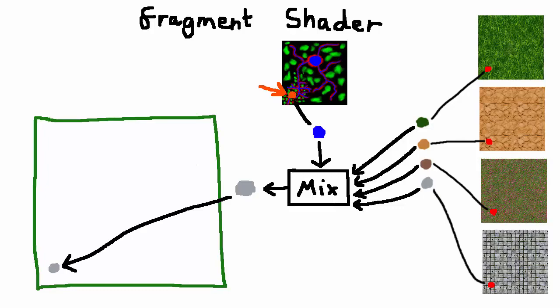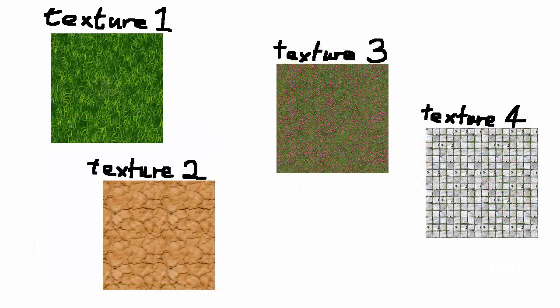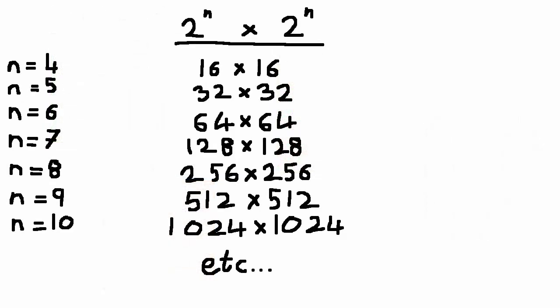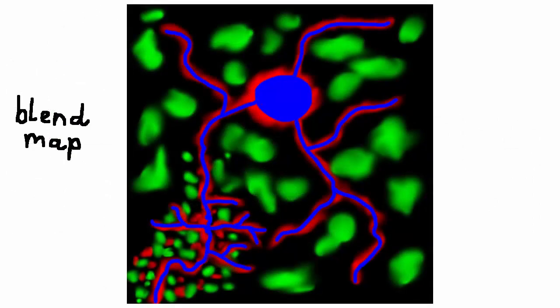Before we start coding you're going to need four textures for the terrain, each of them square and each of them with dimensions of 2 to the n by 2 to the n. You're also going to need one blend map which you'll have to create in some image editing software, or just use the one that I provide in this video's description.